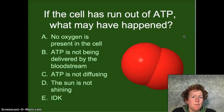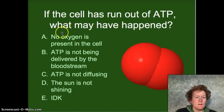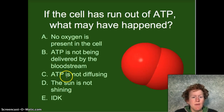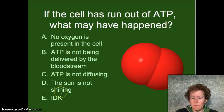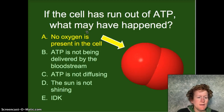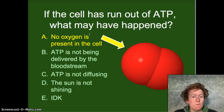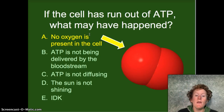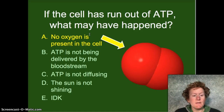If the cell has run out of ATP, what might have happened? Did the cell run out of oxygen? Is ATP not being delivered by the bloodstream? ATP is not diffusing? The sun is not shining? If the cell has run out of ATP, it might be because there's no oxygen. You can't produce ATP — you can't do cellular respiration without oxygen. That's why your body has a circulation system to deliver oxygen to all of your cells constantly.